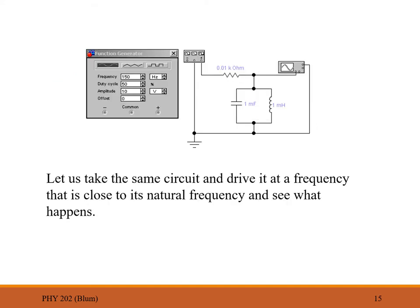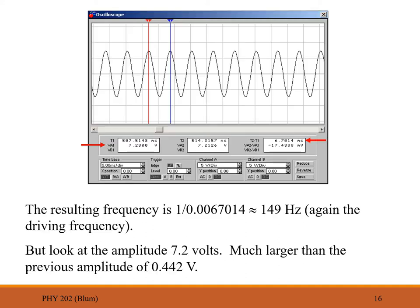Now we change the function generator to about 150 hertz, which is close to the natural frequency of the LC circuit. The oscilloscope shows a period of about 6.7 milliseconds, or 0.0067 seconds, giving roughly 149 hertz — essentially the driving frequency. But the big effect is in the amplitude: we now see 7.23 to 7.21 volts, compared to 0.442 volts before — a significantly larger amplitude.